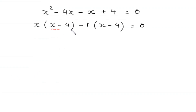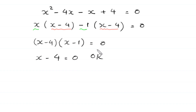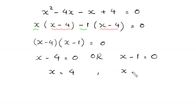From the first two terms we can factor out x, leaving x minus 4, and from the last two terms we can factor out negative 1, also leaving x minus 4. Since x minus 4 is common, we factor it out, giving x minus 4 times x minus 1 is equal to 0. So either x minus 4 equals 0, giving x equals 4, or x minus 1 equals 0, giving x equals 1. We have two values: x equals 4 and x equals 1.